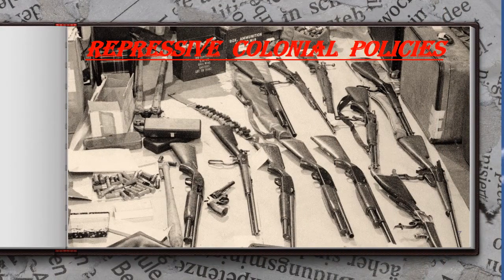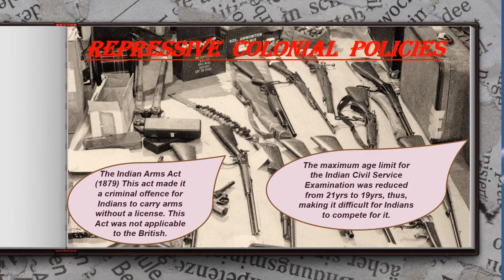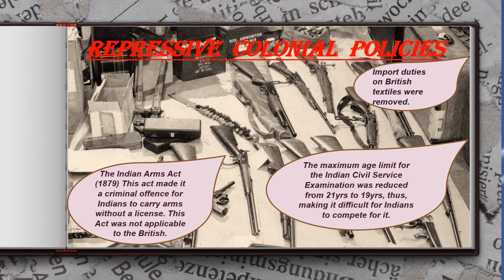Next, the Arms Act of 1878 was passed by the British government. According to this Act, no Indian could possess weapons without a valid license. However, Europeans and Anglo-Indians were allowed to keep arms without a license. The maximum age limit for appearing in the Indian Civil Service examination was also reduced from 21 years to 19 years, making it difficult for Indians to compete. The removal of import duties on British goods further harmed the interests of Indian industries.